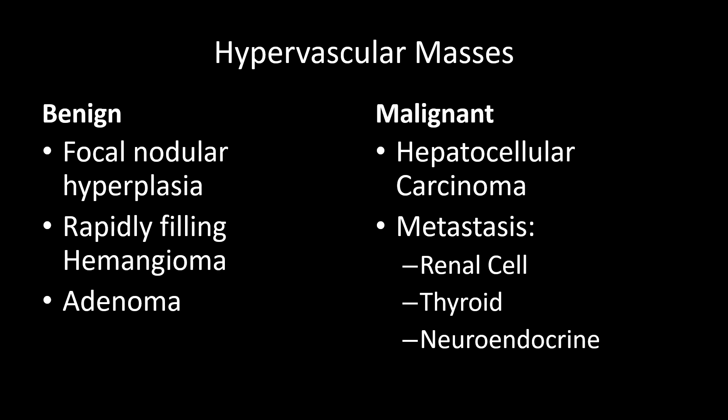When looking at hypervascular masses divided into benign and malignant categories, under benign I think of focal nodular hyperplasia, rapidly filling hemangiomas which are often small — less than one or two centimeters — and hepatic adenomas. Under the malignant category, I think of hepatocellular carcinoma in patients with cirrhosis or risk factors for cirrhosis, or classic hypervascular metastases such as renal cell carcinoma, thyroid cancer, and neuroendocrine tumor.